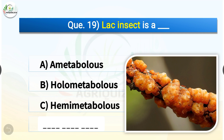Question number nineteen: Lac insect is a which of the following? The options are: ametabolous, holometabolous, or hemimetabolous. The correct answer is option C — hemimetabolous. Lac insect is hemimetabolous, that is it undergoes gradual metamorphosis. It has three life stages, namely egg, young one, and adult.